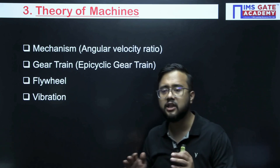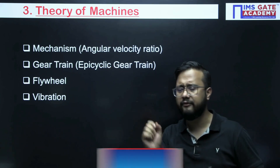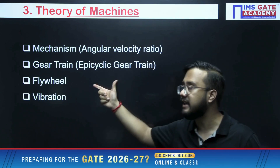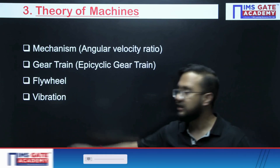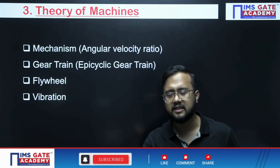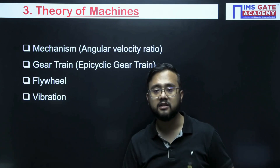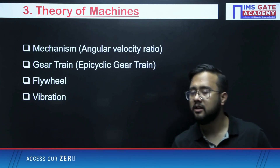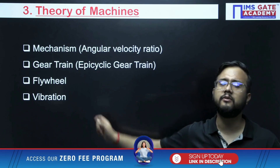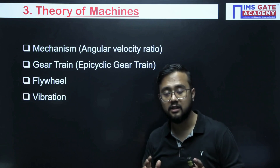Subject number three is Theory of Machines. First, Mechanisms — the most common question every year is based on angular velocity ratio. Then, Gear Trains, specifically epicyclic gear trains. Then, Flywheel and Vibration. The entire Vibration topic is very important — whether it is undamped vibration, forced vibration, forced damped vibration, or forced undamped vibration. All topics including logarithmic decrement are equally important, and every year a question is coming from vibration.